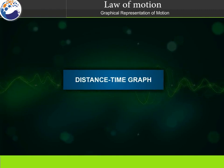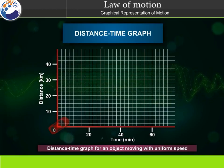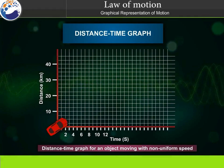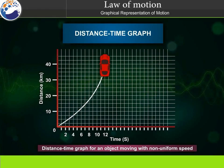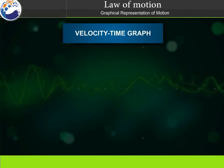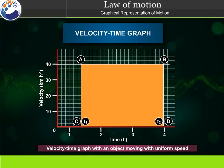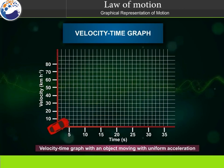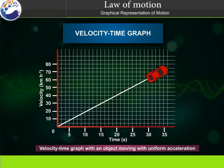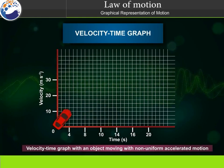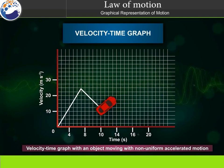Distance-time graph for an object moving with uniform speed. Velocity-time graph for an object moving with uniform speed. Velocity-time graph for an object moving with uniform acceleration. Velocity-time graph for an object moving with non-uniform accelerated motion.